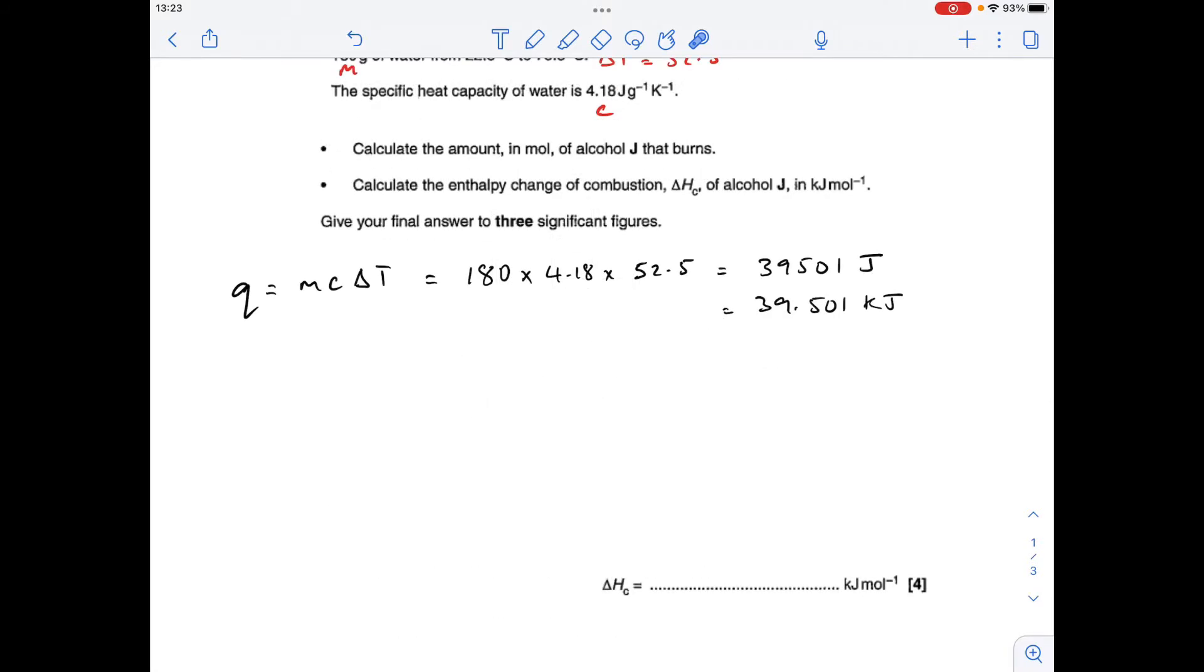So the first thing we do is calculate the energy transferred to the water from the reaction, so MC delta T. So we get that many joules, which is that many kilojoules. We've got to give our final answer in kilojoules per mole.